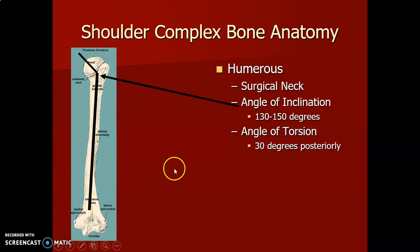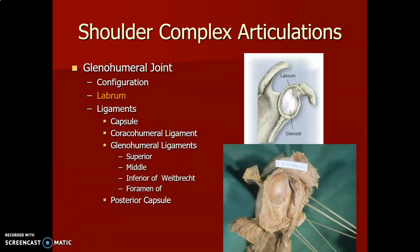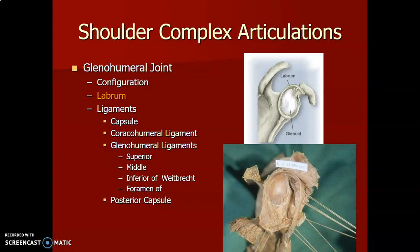The shoulder has complex articulations. There is a glenohumeral joint, a scapulothoracic joint, an acromioclavicular joint, and a sternoclavicular joint — all within the shoulder joint complex. The sternoclavicular is a saddle synovial joint. The acromioclavicular is a planar synovial joint. The glenohumeral is a ball and socket synovial joint. The scapulothoracic is a physiological joint.